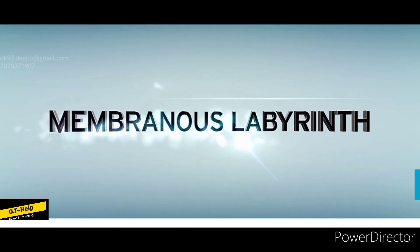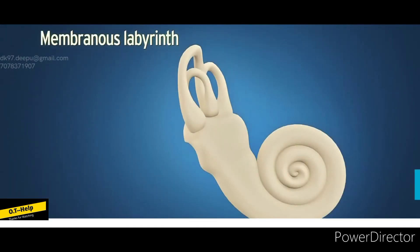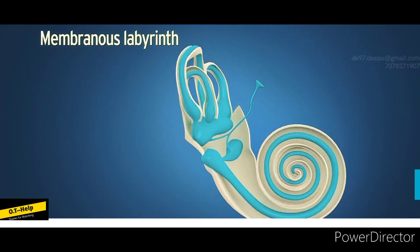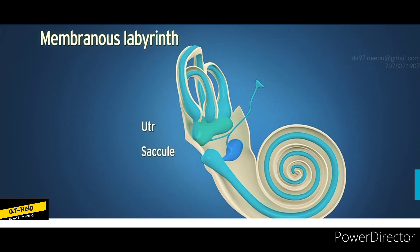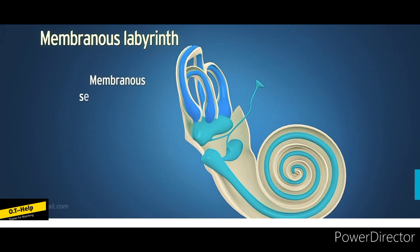The membranous labyrinth is present within the bony labyrinth. The cochlear duct or scala media lies within the bony cochlea, the saccule and utricle lie within the vestibule, and the membranous semicircular ducts are lodged in the bony semicircular canals.